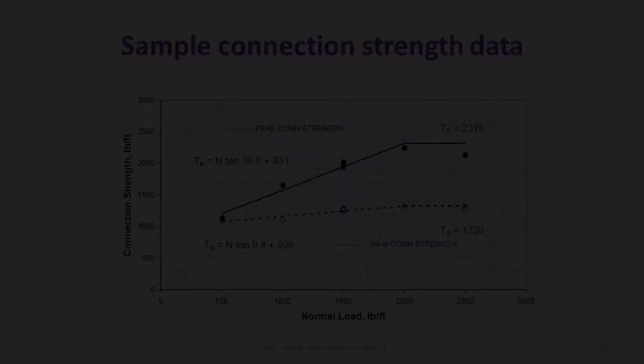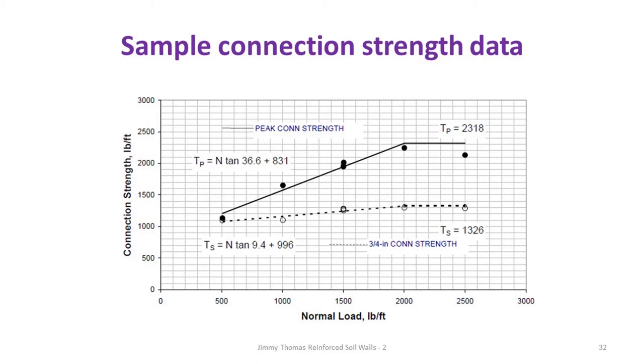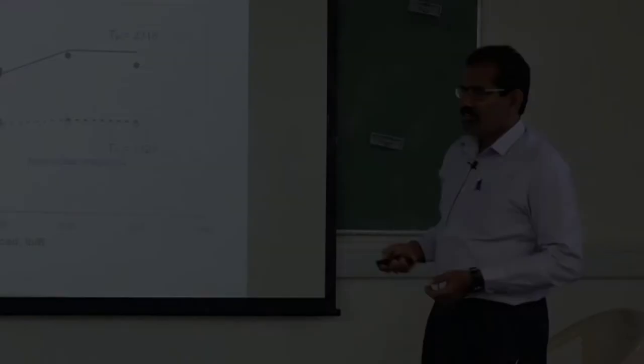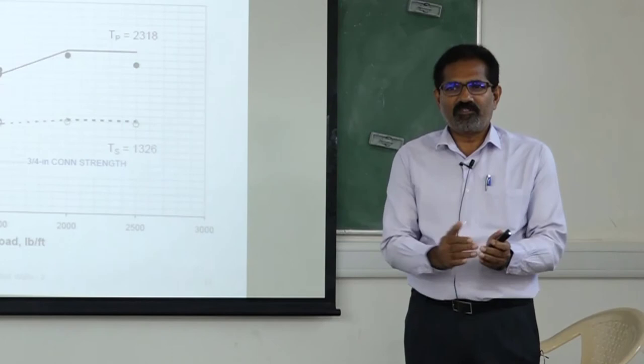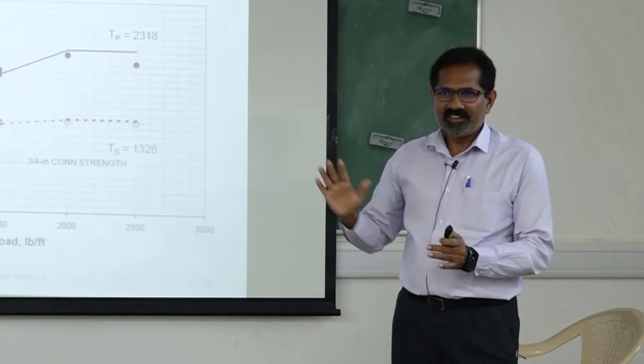In some cases the ultimate and serviceability values are not much different, while in others the difference is significant. Each block and grid combination is unique — suppose one company has products of 40 kN, 60 kN, and 80 kN, the results will be very different for each. If I only have the result for 40 kN, I cannot use it for 60 kN. Each product and block combination has to be tested individually.